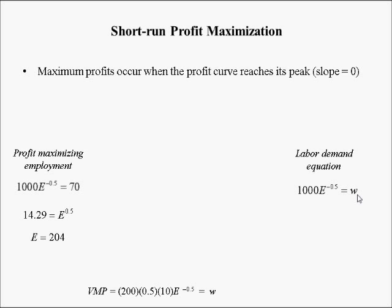This equation — VMP = W — is the labor demand equation. The competitive firm can't choose its wage; it must pay whatever the overall labor market pays. It can't pay less or workers won't come; it won't pay more because it can hire as many workers as it wants at the market wage. So the firm simply pays the market wage, and chooses E so that VMP equals that wage, thereby maximizing profit.